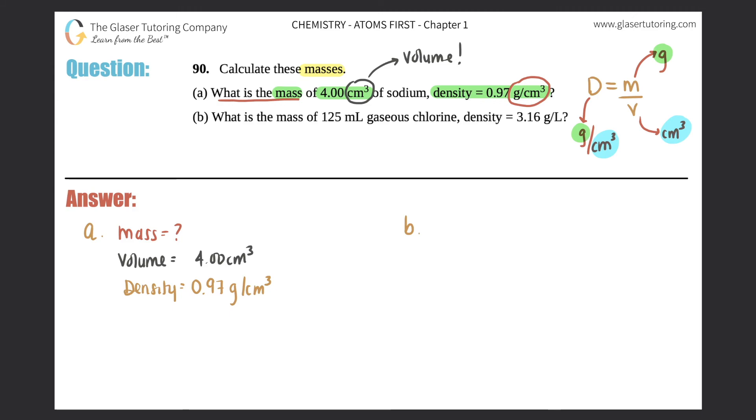But in here, there's no problem because centimeter cubed is the same as centimeter cubed. So we can jump right into the formula. D equals M over V, 0.97 equals X over, because that's what we're solving for, 4.00.